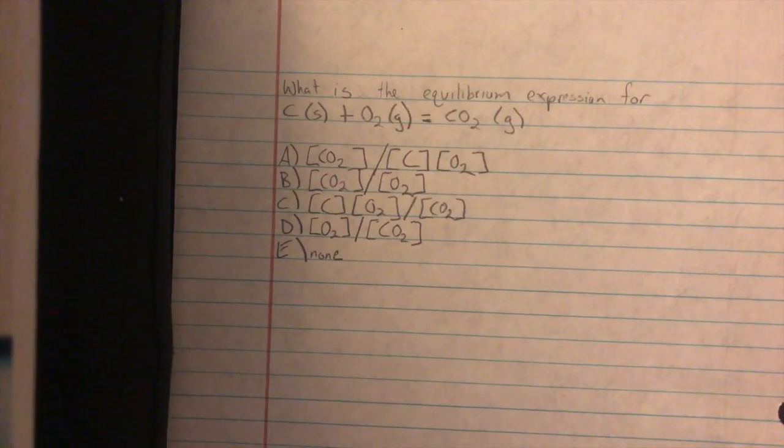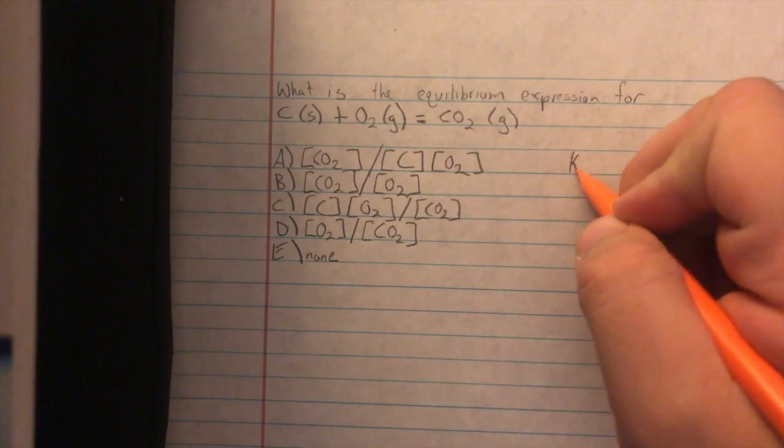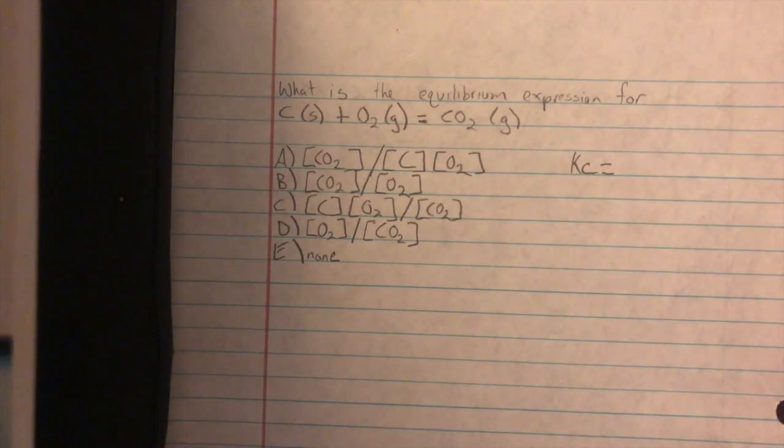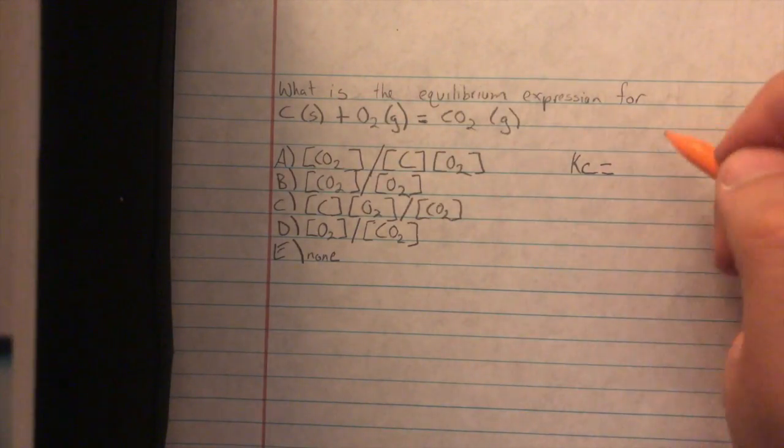Well first of all, let's review how to get the equilibrium expression. Kc, or equilibrium expression, is equal to the products over the reactants.